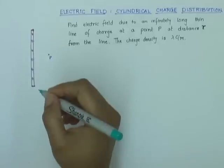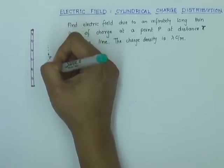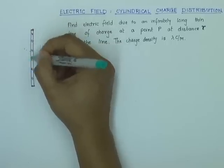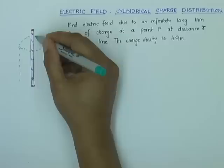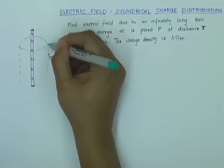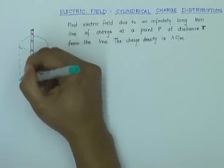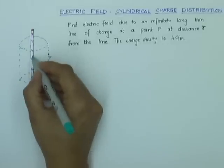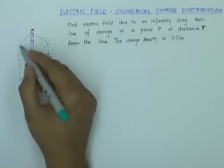So let us try to take a Gaussian surface which is also cylindrical and passing through point P. This is my Gaussian surface and it is a cylinder. The radius of the cylinder is the distance r.